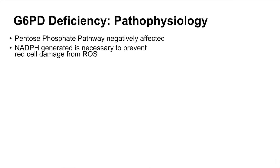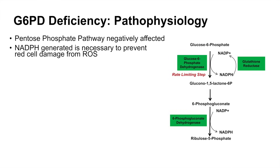When we look at the schematic of the pentose phosphate pathway, we can see the reason why the glucose-6-phosphate dehydrogenase enzyme is so important. It is the first step in the pentose phosphate pathway, and it generates NADPH — specifically from the dehydrogenase reaction of glucose-6-phosphate by the enzyme glucose-6-phosphate dehydrogenase.